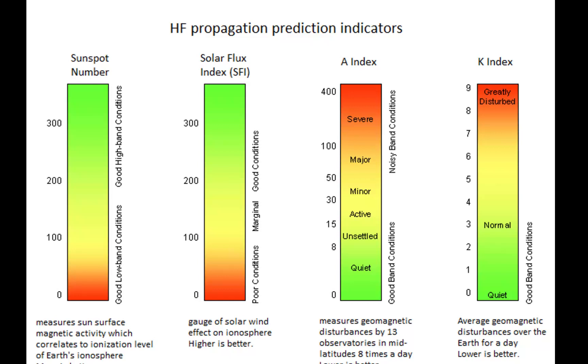Next question, what does the K index measure? The four most common indices of how the sun is affecting radio propagation on Earth are the sunspot number, the solar flux index, the A index, and the K index. Now the K index, think of K as kick. Just remember K, kick, it's a short-term stability of Earth's geomagnetic field. On a scale of zero to nine, zero being quiet, nine being greatly disturbed. The K index measures a quick short-term measurement, short-term stability of the Earth's geomagnetic field.